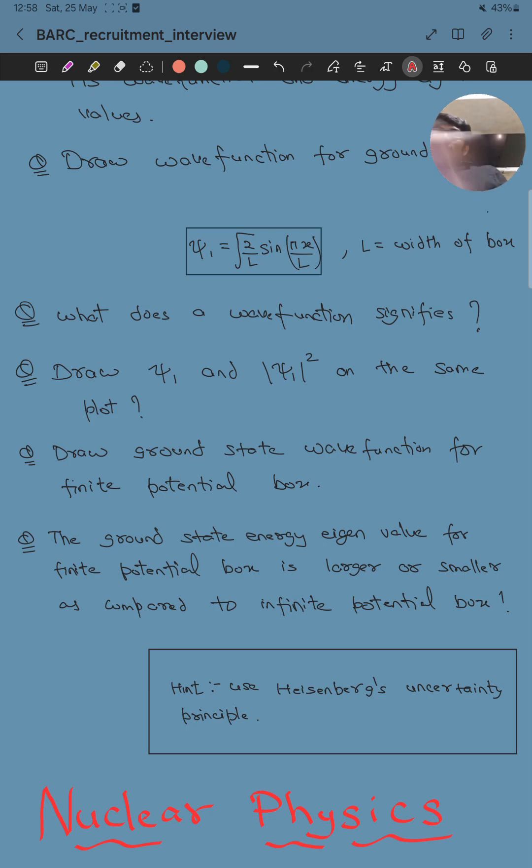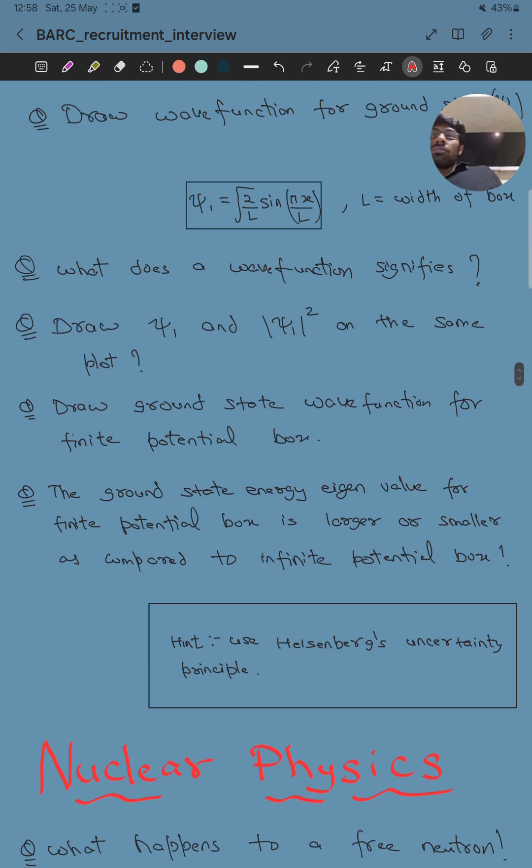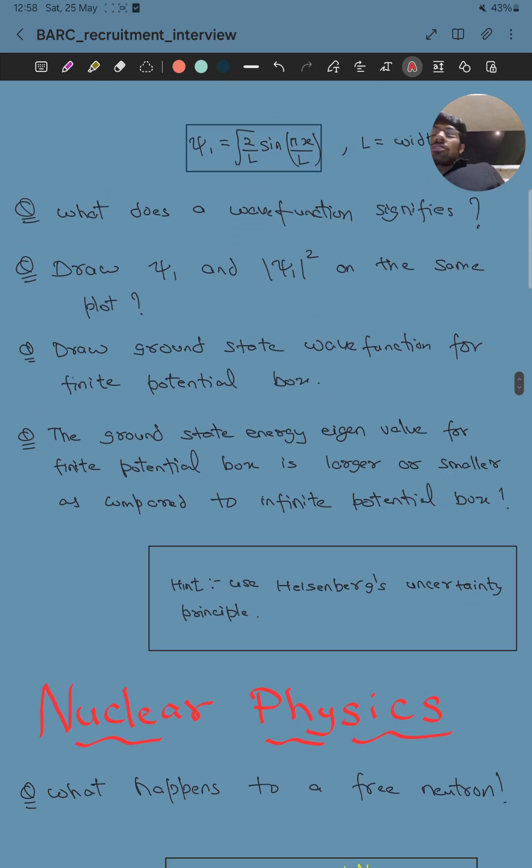Next was to draw psi 1 and the square of the modulus of psi 1 on the same plot. You have to be careful that this probability density function will be smoother than its wave function. You should try this.